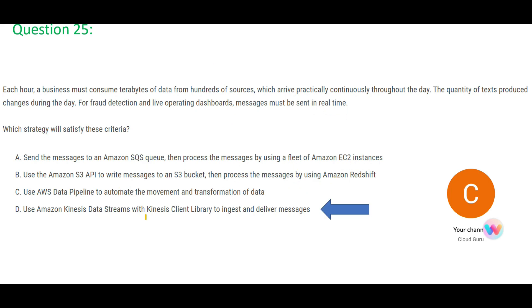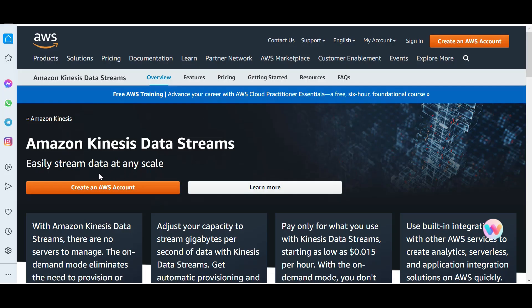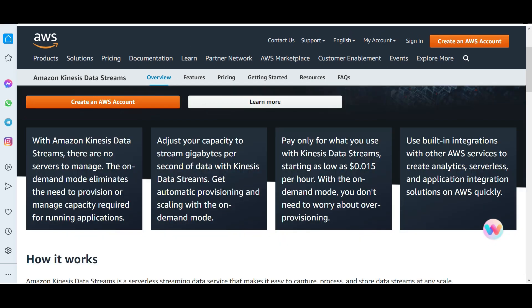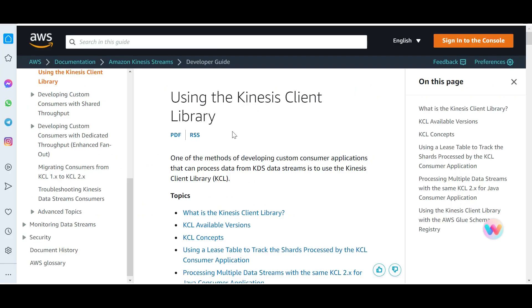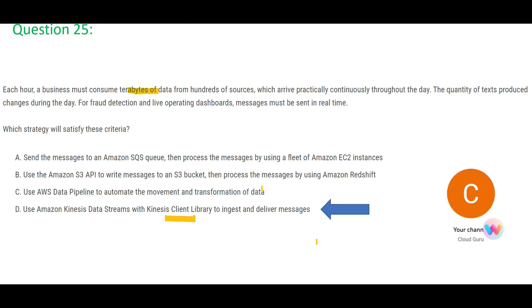My answer is option B: Kinesis Data Streams. Whenever we talk about streaming data, that is real time. Kinesis can adjust capacity to stream gigabytes per second, and here you need to handle terabytes of data from hundreds of sources — at gigabytes per second that is very powerful. KCL, the Kinesis Client Library, is a library you can use to code your data streaming applications. That is my final answer.